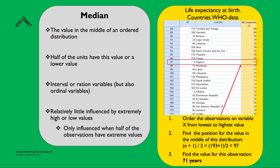The median is also a measure of central tendency — it is the value in the middle of an ordered distribution, where half the units have this value or lower. In our example, ordered from lowest to highest life expectancy, we find the middle position by taking the number of countries plus one divided by two. With 193 countries, that's position 97, which corresponds to Algeria at 71 years — that is the median value.